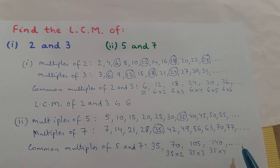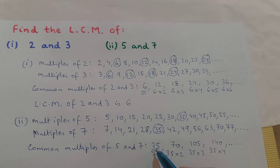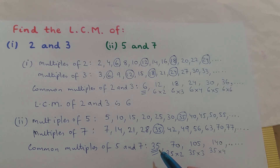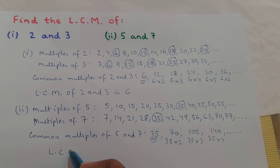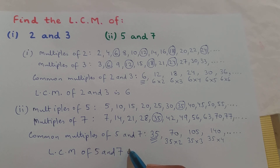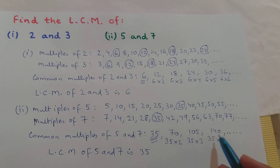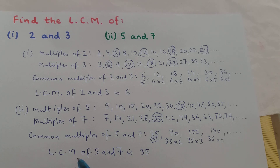Out of these common multiples, the lowest common multiple of 5 and 7 is 35. All the other common multiples of 5 and 7 are greater than 35. So the LCM of 5 and 7 is 35.